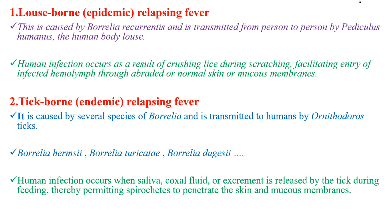The second type is tick-borne, or endemic relapsing fever. This is caused by several species of Borrelia and is transmitted to humans by Ornithodoros ticks. Human infection occurs when saliva, coxal fluid, or excrement is released by the tick during feeding, thereby permitting spirochetes to penetrate the skin and mucous membrane.